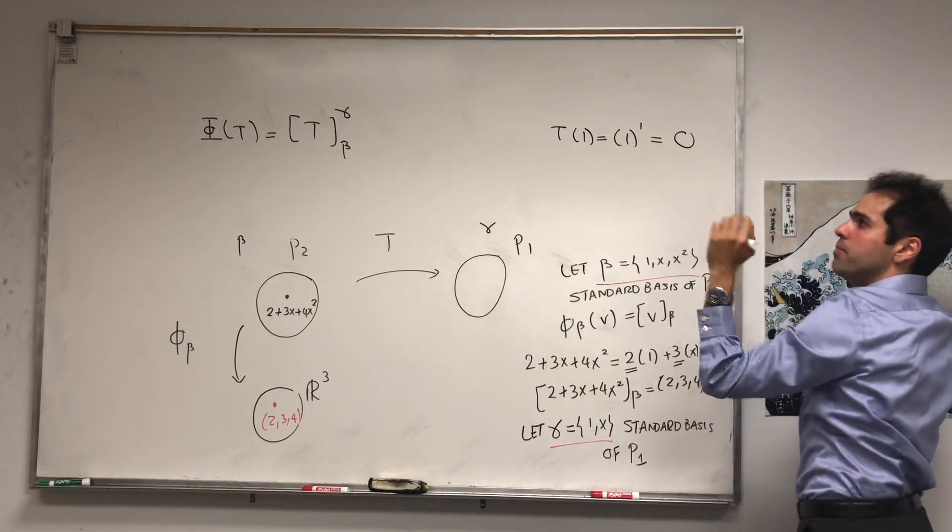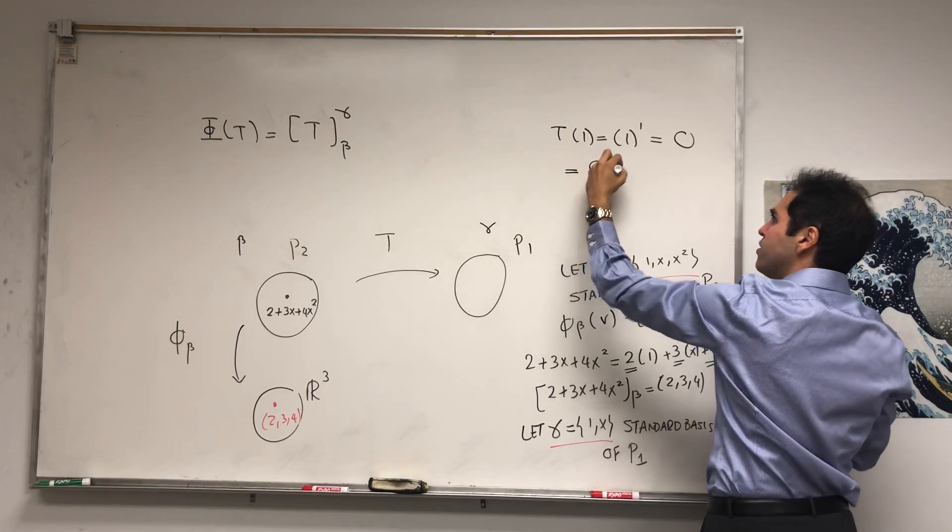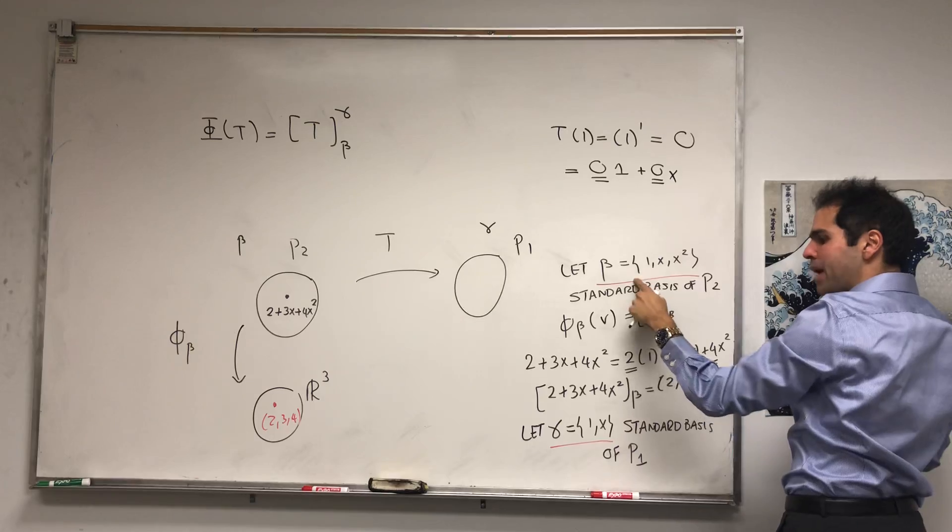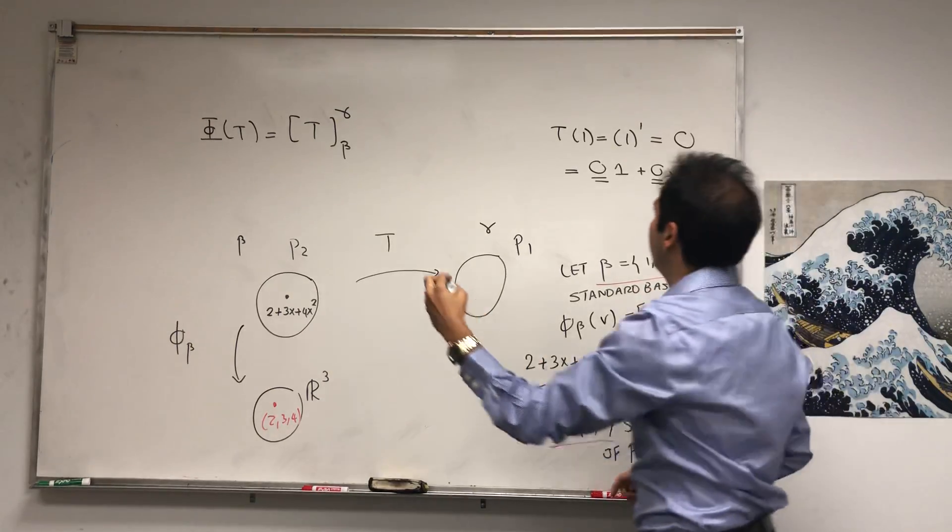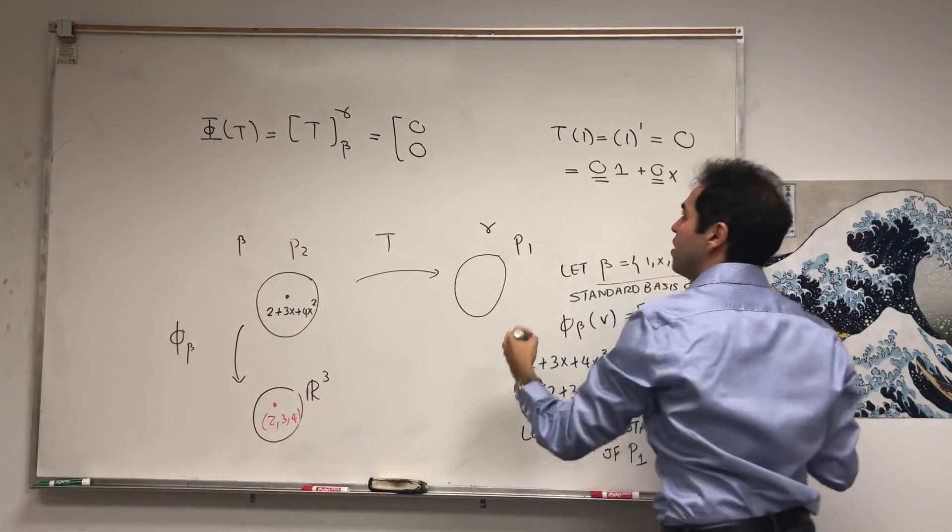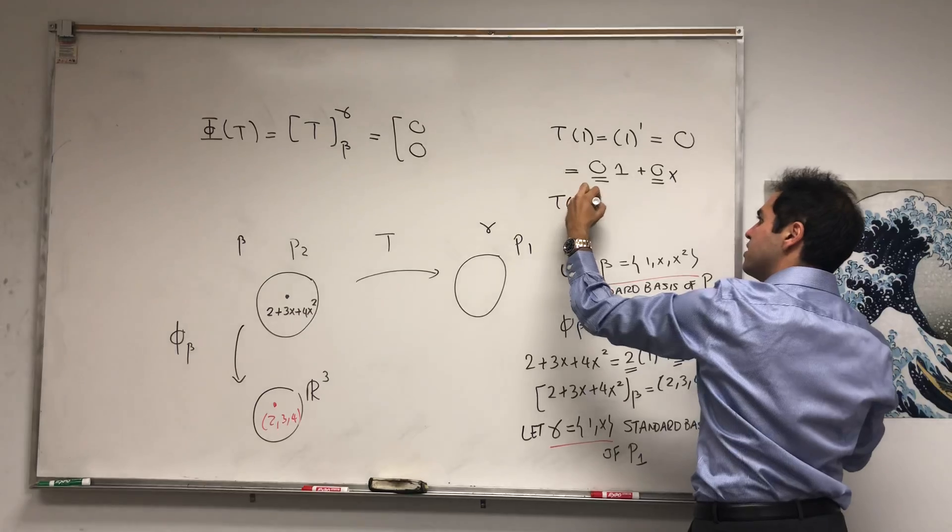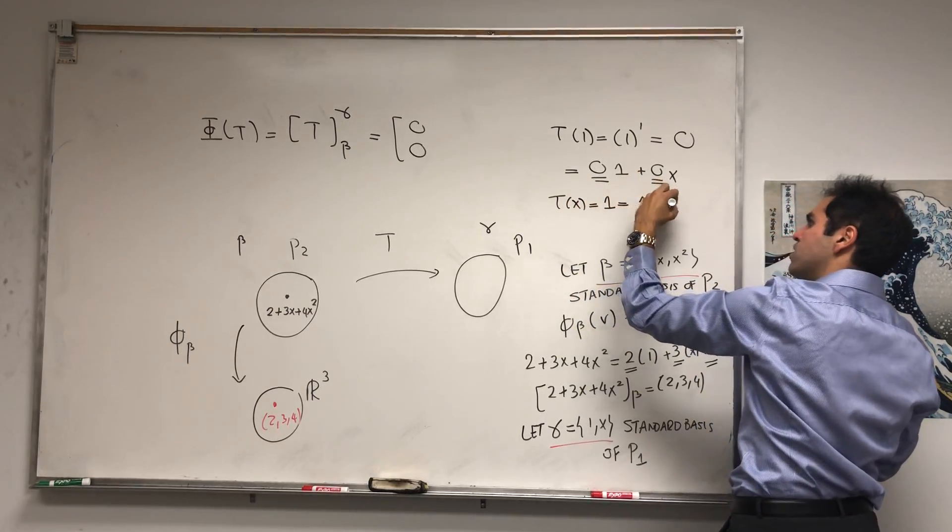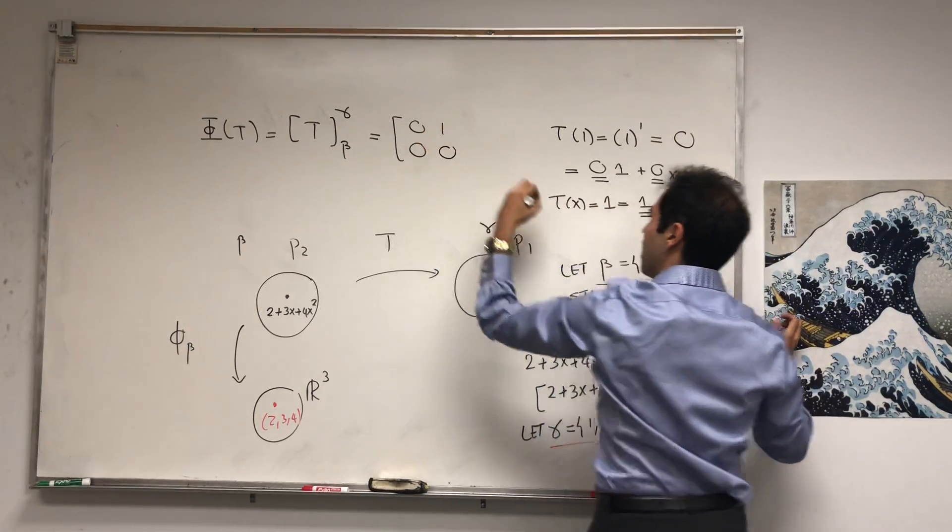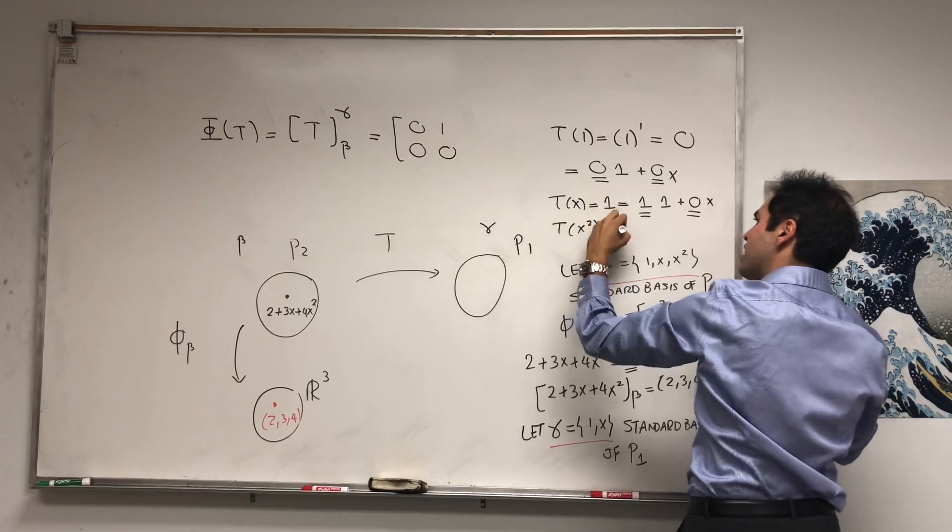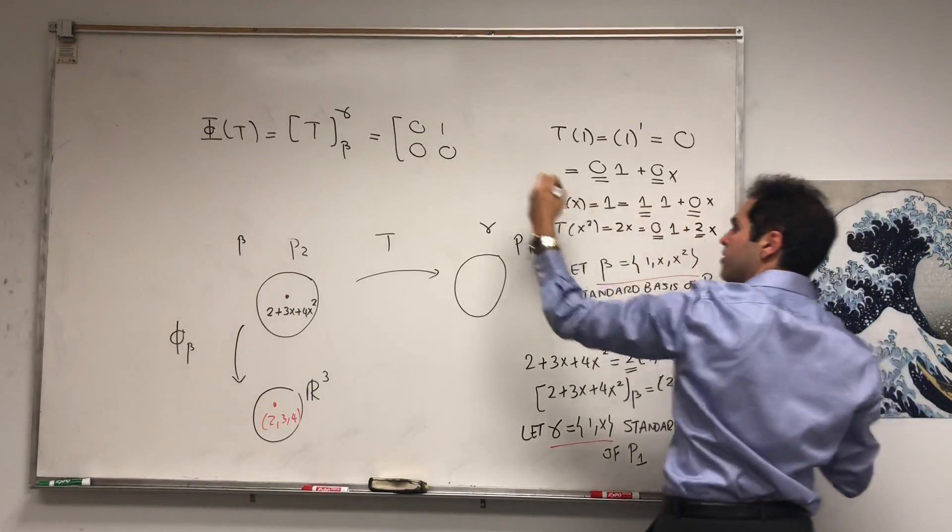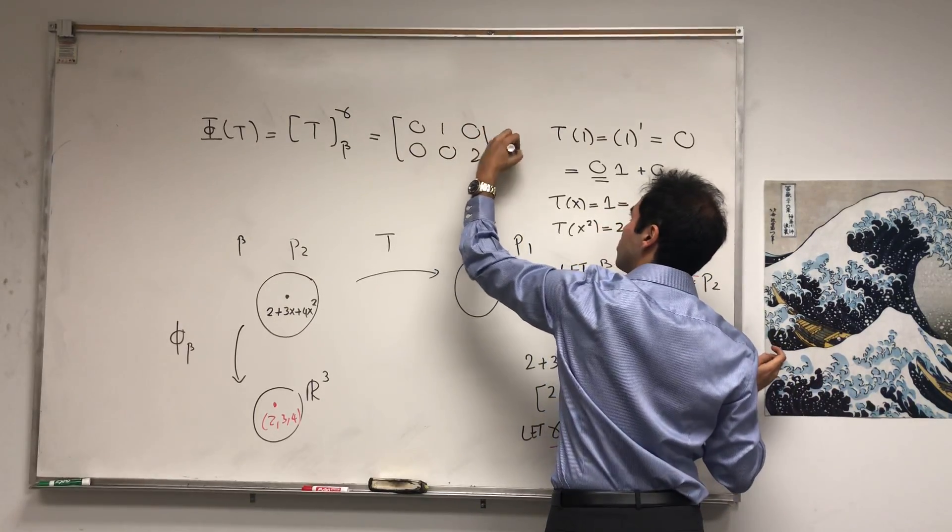So T of 1, that's the derivative of 1, and we need to know how to differentiate to do this problem. But the point is, we're not differentiating this very complicated vector, we're differentiating easier vectors: 1, x, x squared. So 1 prime is 0, and then you can write it as 0 times 1 plus 0 times x. You take vectors in β and express it in terms of γ, which tells you that the first column of T is 0, 0. And then you continue, T of x equals 1, and that's 1 times 1 plus 0 times x, and you get 1, 0. And lastly, T of x squared, that's 2x, and that's 0 times 1 plus 2 times x. That gives you your matrix.